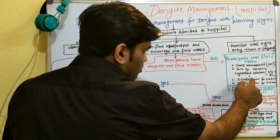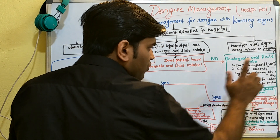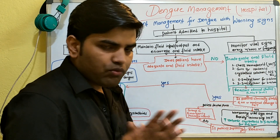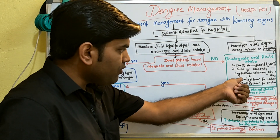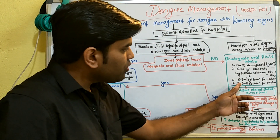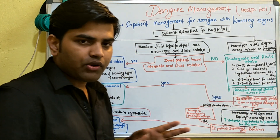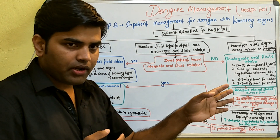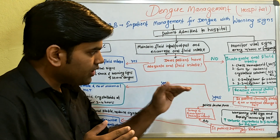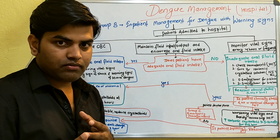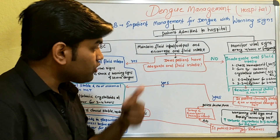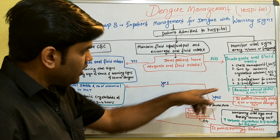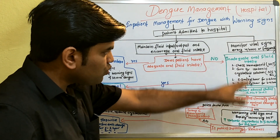Initially, start NS or RL at 5 to 7 ml per kg per hour for 1 to 2 hours. After that, reduce the rate — if you started at 7, come down to 5; if at 5, come down to 3 ml per kg per hour for the next 4 hours. So over 6 hours total: first 2 hours at 5 to 7 ml/kg/hr, then next 4 hours at 3 to 5 ml/kg/hr. Then reassess — check hematocrit level and clinical hemodynamic stability.